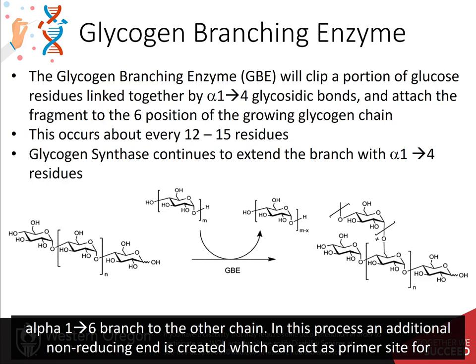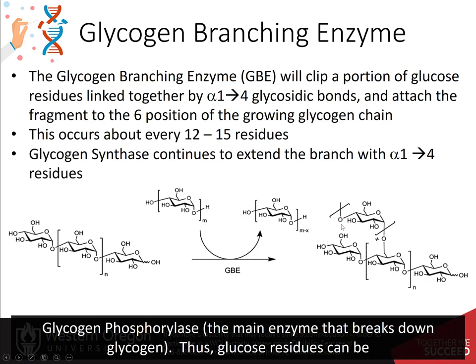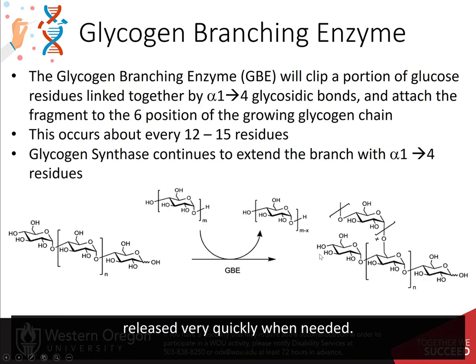In this process, an additional non-reducing end is created, which can act as a primer site for glycogen phosphorylase, the main enzyme that breaks down glycogen. Thus, glucose residues can be released very quickly when needed.